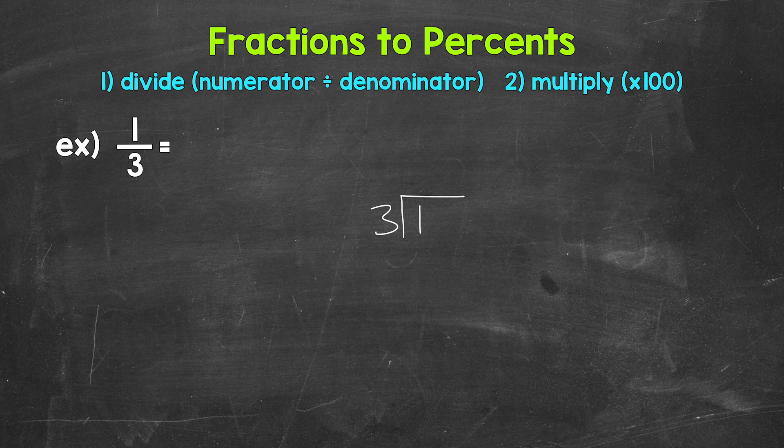Then we go through the division process. So we have 1 divided by 3. How many whole groups of 3 in 1? How many 3's in 1? Well, we can't do that. So we need a decimal and a 0 in order to work through this problem. Once we have the decimal and the 0, we bring the decimal straight up into where the quotient, the answer, will be.